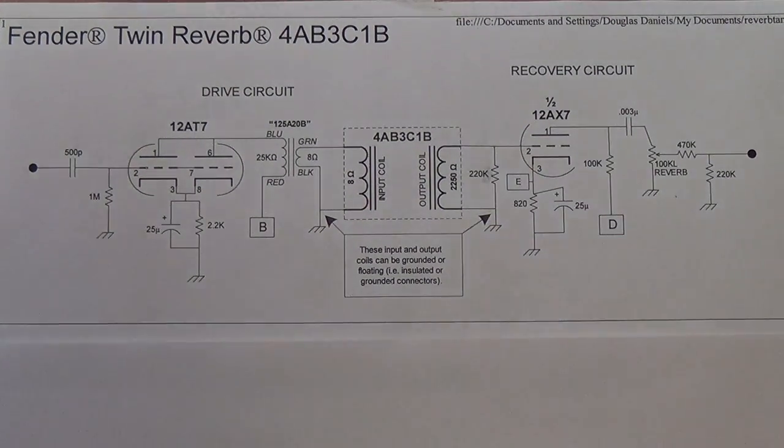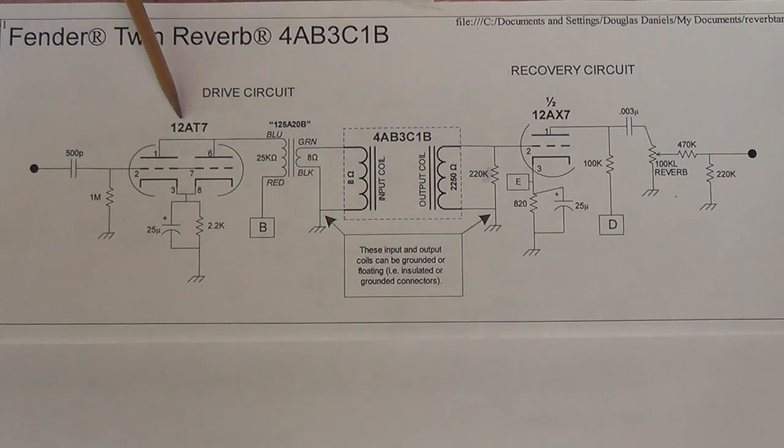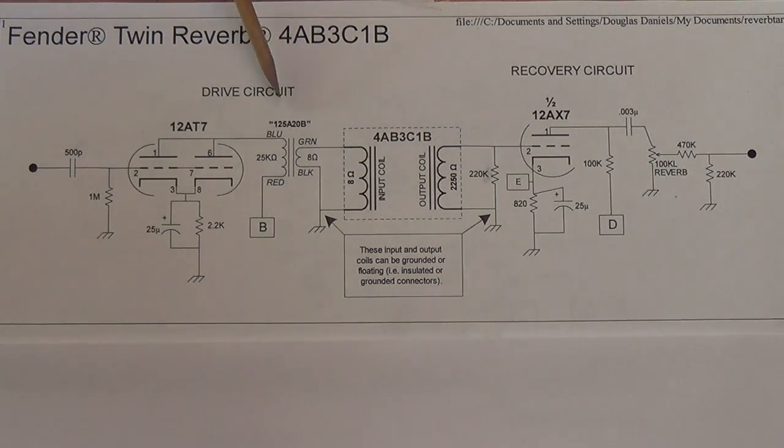Instead of the single triode of a 12AX7 we're going to use both triodes of a 12AT7 to drive a 125A20B reverb driver transformer. We're going to use the 4AB3C1B reverb tank. It's a 17 inch tank and then for recovery we're going to use one of the triodes of a 12AX7.